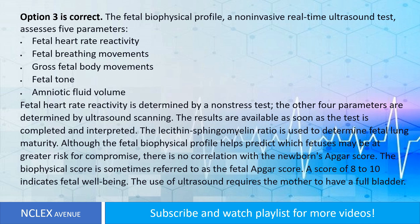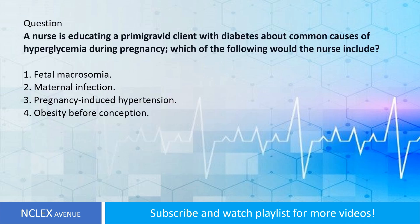The results are available as soon as the test is completed and interpreted. The lecithin-sphingomyelin ratio is used to determine fetal lung maturity. Although the fetal biophysical profile helps predict which fetuses may be at greater risk for compromise, there is no correlation with the newborn's Apgar score. The biophysical score is sometimes referred to as the fetal Apgar score. A score of 8 to 10 indicates fetal well-being. The use of ultrasound requires the mother to have a full bladder.